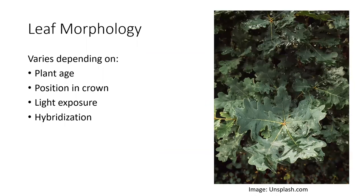Leaf morphology can vary depending on how old the plant is. Often our younger seedlings and saplings will have larger leaves than normal because they're trying to soak up as much sun to produce photosynthate as they can. It might depend on what position that leaf is in the crown — there's a difference between sun leaves and shade leaves. Some plants hybridize within themselves — oaks will hybridize white oaks with white oaks and red oaks with red oaks, and their progeny don't always adhere to the genetic form or genotype. When choosing a leaf for identification purposes, look for a more mature leaf with full sun exposure, close to the end of the branch.